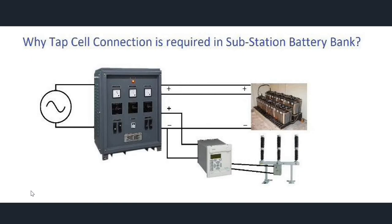There are different sets of battery banks available in substations for communication systems as well. In a battery or battery bank, generally we know there are two terminals — one positive and one negative — but in a substation what we observe is that there are three connections given to a battery coming from the charger. Why this third connection is used, and how it is connected, we'll see from the block diagram. It can be observed that an AC source is connected as input to the charger and the output of the charger is connected to batteries as well as the relays and circuit breakers, which are considered the DC loads for the substation.